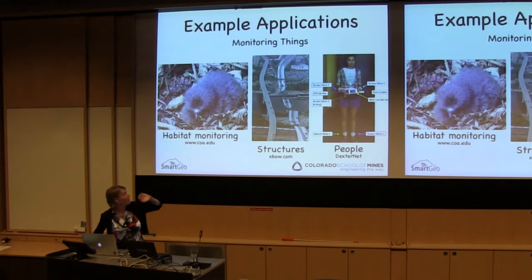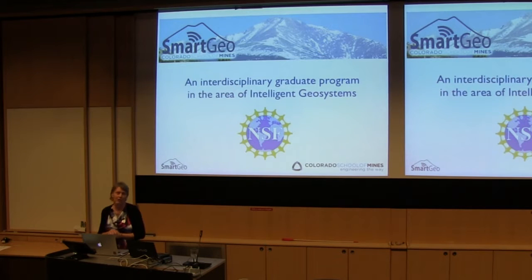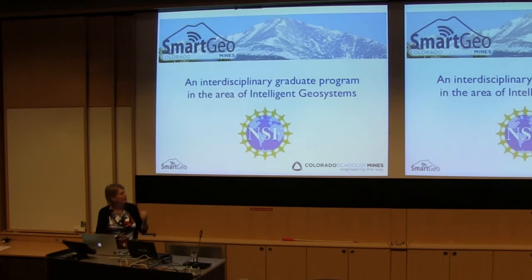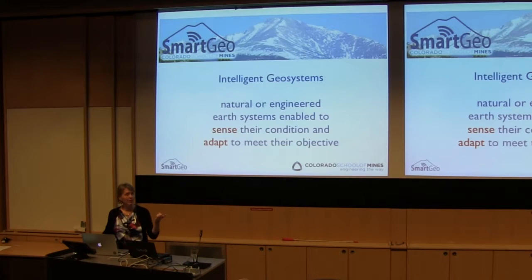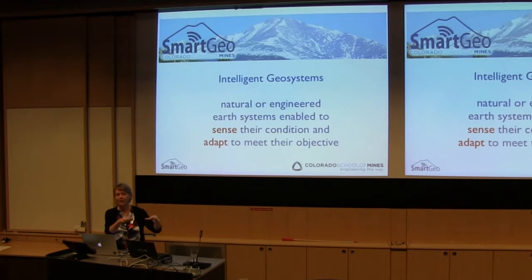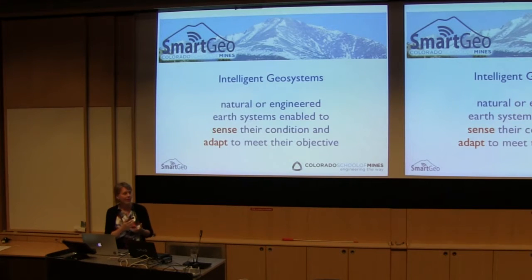The list goes on and on, and this leads to the research that I do. I kind of fall in the middle area where we are monitoring things. The specific program where I work is called SmartGeo — an interdisciplinary graduate program in the area of intelligent geosystems. An intelligent geosystem is a natural or engineered earth system: things like bridges, underground tunnels, earth dams and levees — things that we build that interface with the earth. You make that geosystem intelligent by deploying a wireless sensor network to sense what's happening and then adapting to improve the objective of the geosystem.